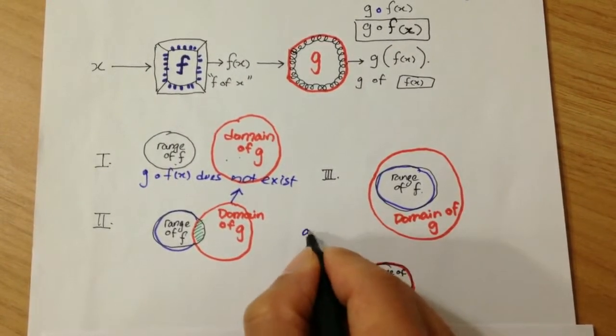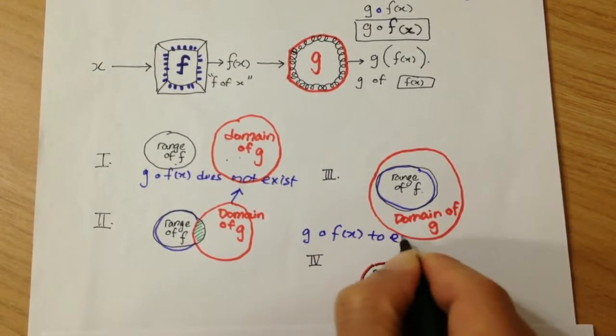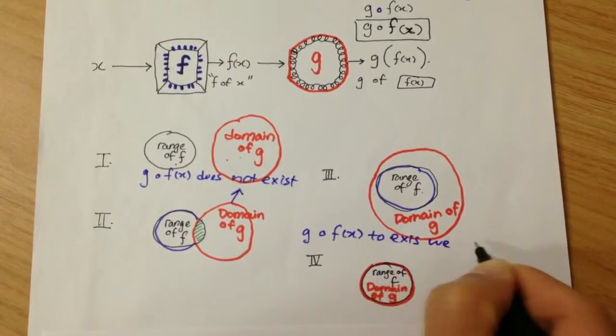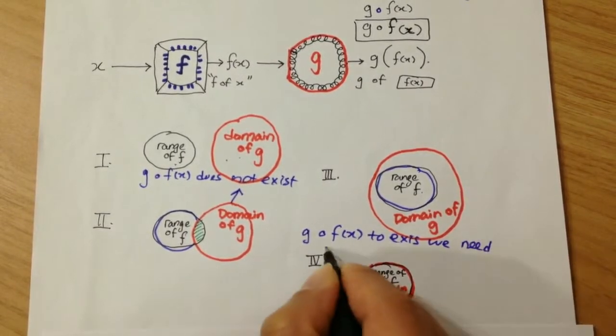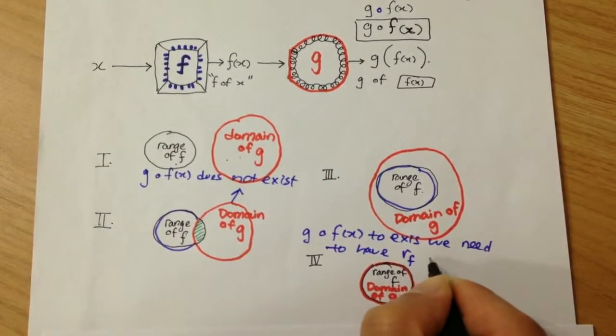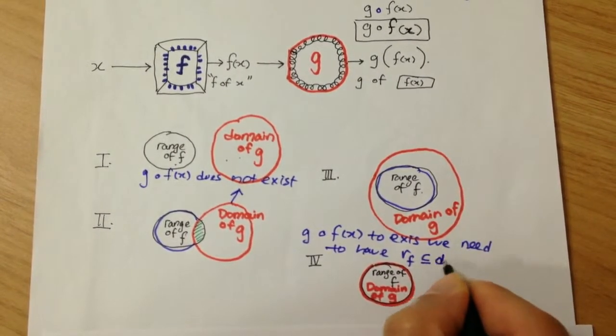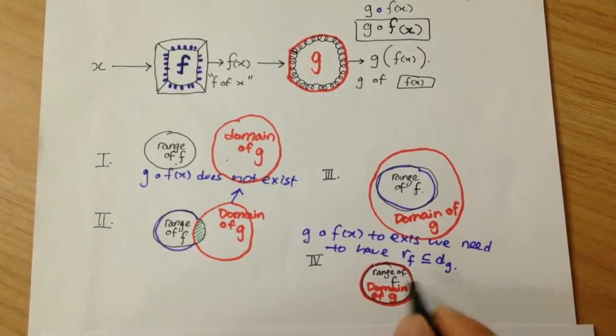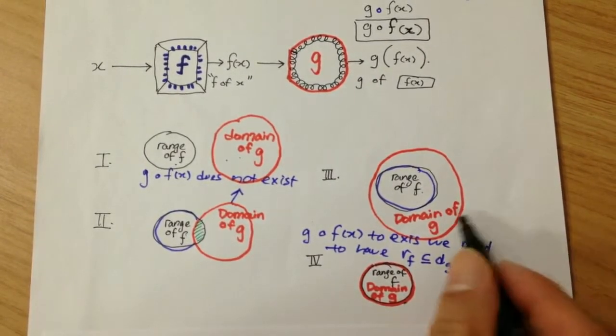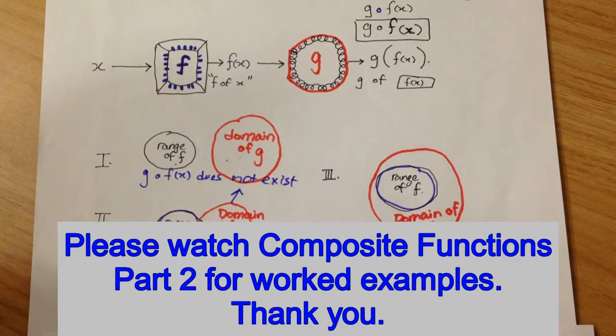So for a composition g of f of x to exist, we need to have the range of f to be a subset of the domain of g. So either they are same size, or the range of f is smaller than the domain of g.